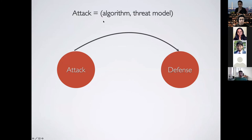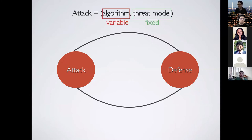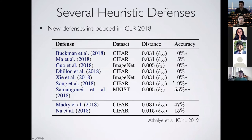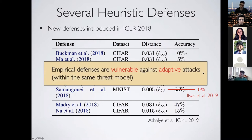When we have a defense, we can think about adaptive attacks where the adversary wants to break it. The attack has either an attack algorithm or the threat model. Assuming the adversary uses the same threat model as the defense, they may still change the attack algorithm to break the defense. In a follow-up paper at ICML it was shown that almost all empirical defenses can be broken, due to gradient masking or gradient obfuscation. This shows empirical defenses can be vulnerable against adaptive and stronger attacks even within the same threat model.